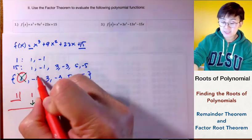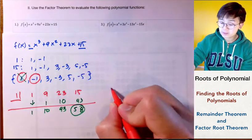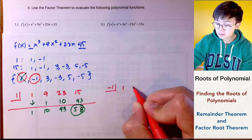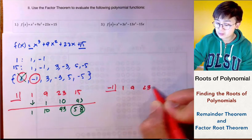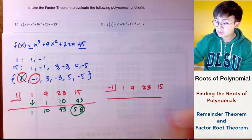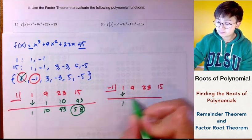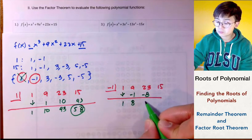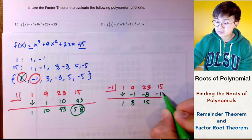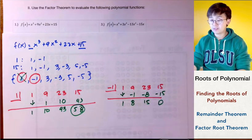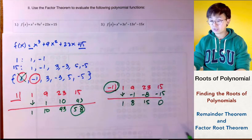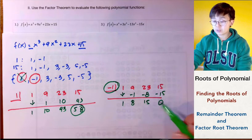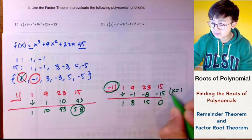Let's try the second candidate, negative 1, hoping it gives a remainder of 0. Using the coefficients 1, 9, 23, and 15 in synthetic division, we get a remainder of 0 — negative 15 gives us 0. So negative 1 has a remainder of 0, which means it is one of the solutions.